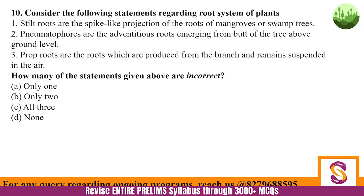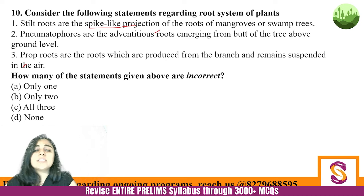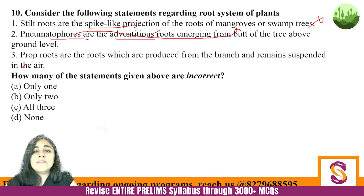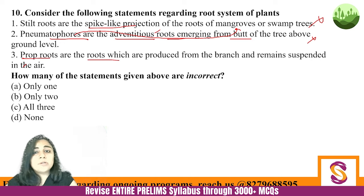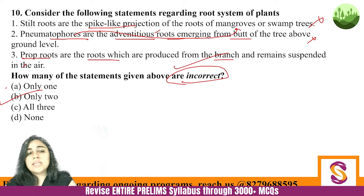Let's solve the question. Statement one: Stilt roots are spike-like projections. No — actually pneumatophores are the spike-like projections from mangroves, clearly stated. So statement one is incorrect. Statement two: Pneumatophores are adventitious roots emerging from the butt. No — those are stilt roots. So statement two is also incorrect. Statement three: Prop roots are roots produced from branches. Absolutely correct. Since the question asks for incorrect statements and two are incorrect, the answer is B.